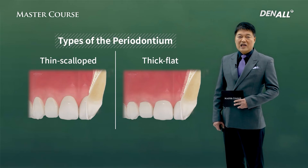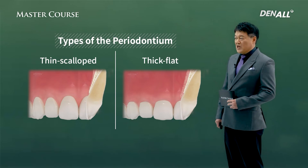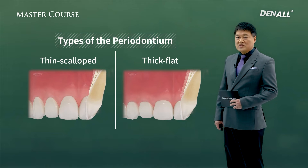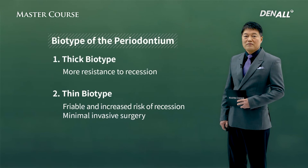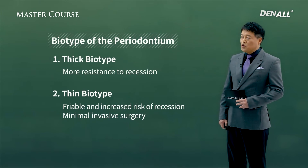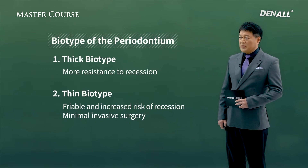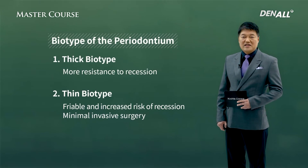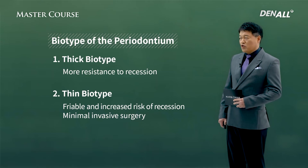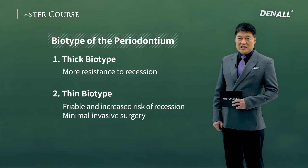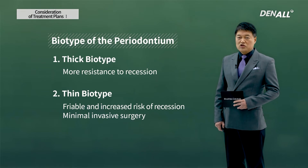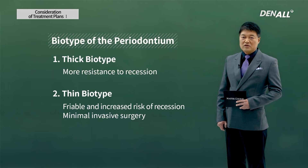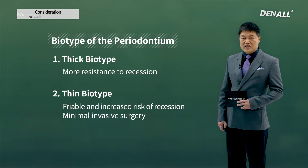Another thing to evaluate is periodontium type — check whether it is thick or thin biotype. In the case of thick biotype, recession does not really occur. For thin biotype, recession occurs, so you can consider minimally invasive surgery. Especially in the anterior region, aesthetics is important so you need to pay more attention.